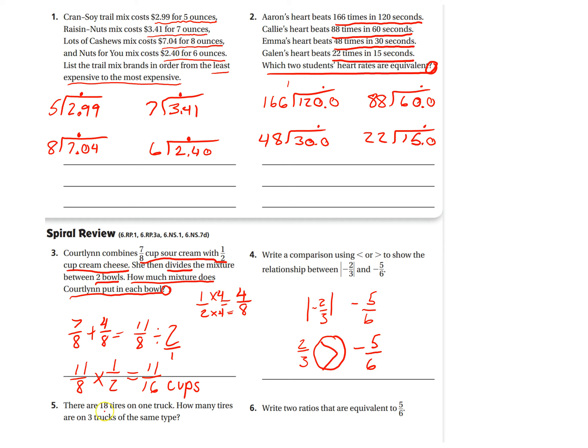Okay. Number 5. 18 tires. There are 18 tires on one truck. How many tires are there on 3 trucks of the same type? So, this is just a multiplication problem. 1 is 18 or we can do it as a ratio as well. We can do it as a table as well. Many, many ways to solve this problem. So, 2 would be another 18 and then 3 trucks would be another 18. So, we can do 3 times 18 or we can do 18 plus 18 gives you this number. This number plus another 18 would give you this number.